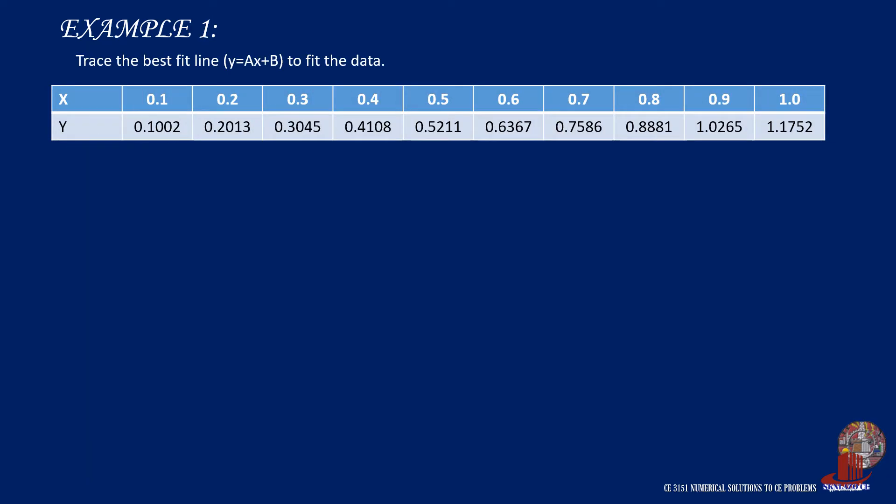Example number 1. Determine the equation with format y equals ax plus b to fit the points described in the set. The two equations for this process are: the first equation, summation of y equals a times summation of x plus nb; and the second equation, summation of xy equals a times summation of x squared plus b times summation of x, as derived and explained in the previous videos.